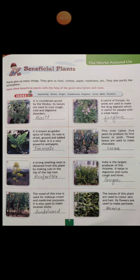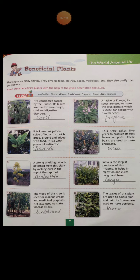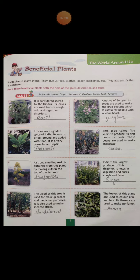The fifth plant: a strong-smelling resin is obtained from this plant by making cuts in the top of the taproot. This plant is known as asafoetida.